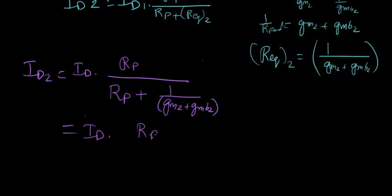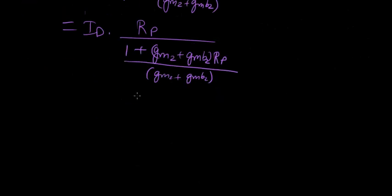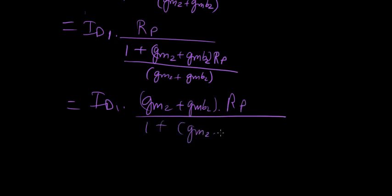Let's solve this. ID1 times RP over this multiplied by here, it'll give you one plus GM2 plus GMB2 times RP over GM2 plus GMB2. So that goes to the top. This is ID1.